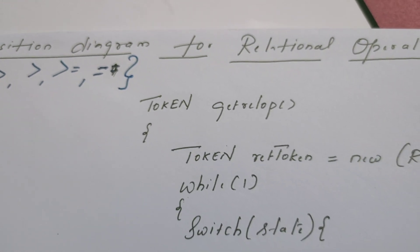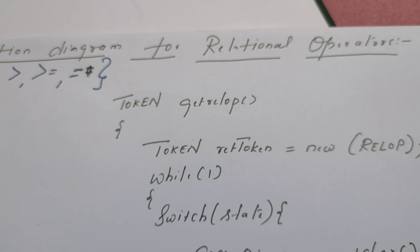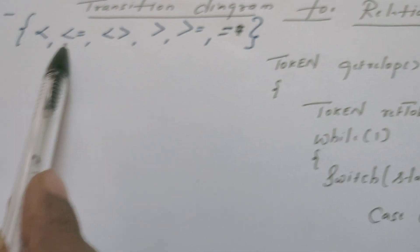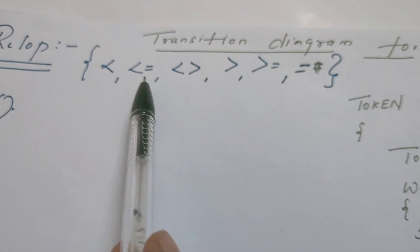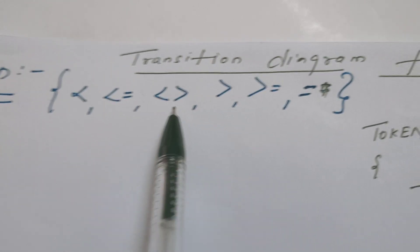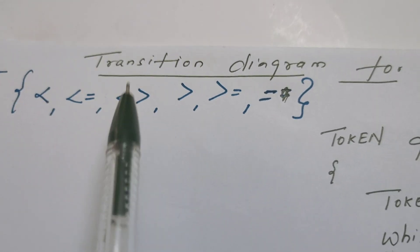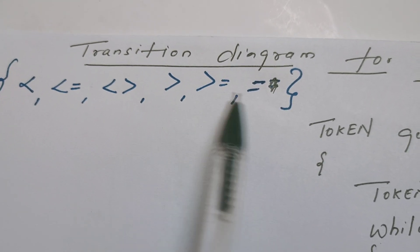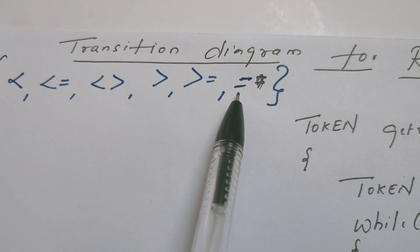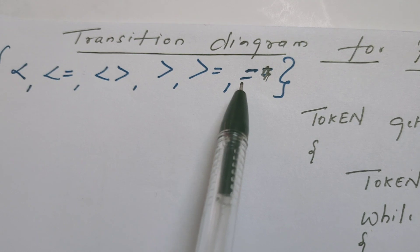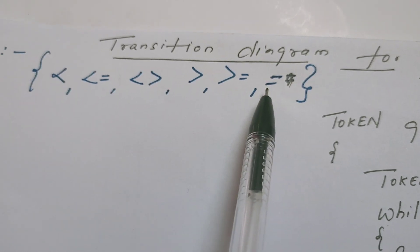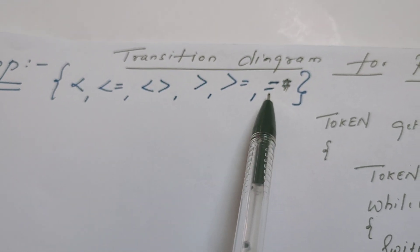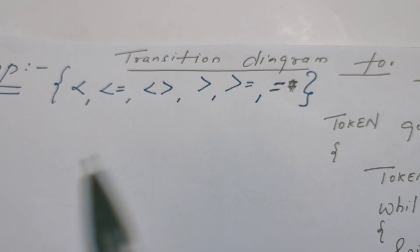This is a set of relational operators for the Fortran language: less than, less than or equal to, not equal to, greater than, greater than or equal to. And single equal to is used as the equal to operator — it is not an assignment operator here.